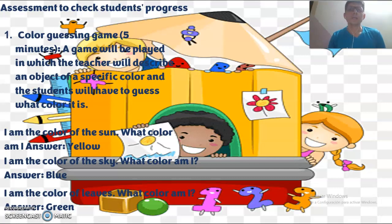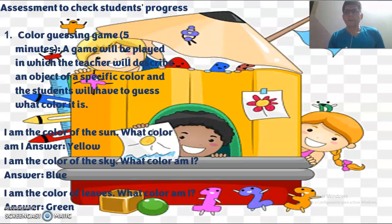Step 7: Color guessing game, five minutes. A game will be played in which the teacher will describe an object of a specific color and the student will have to guess what color it is. For example: I am the color of the sun. What color am I? Yellow. I am the color of the sky. What color am I? Blue. I am the color of the leaf. What color am I? Green.